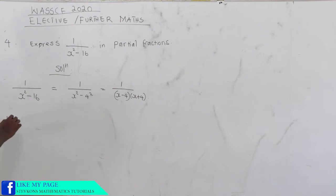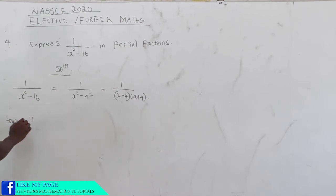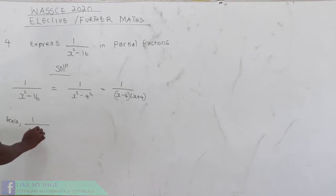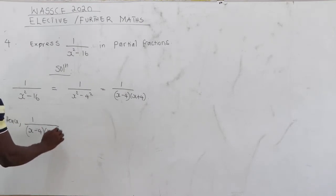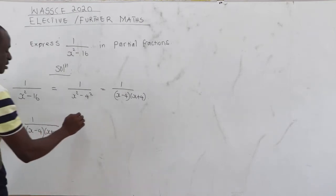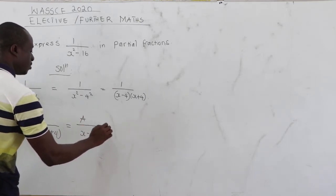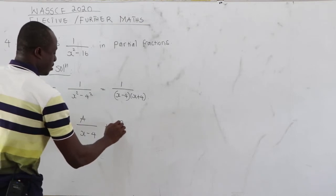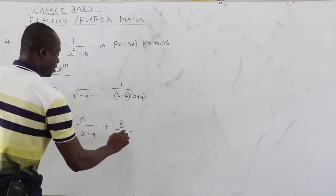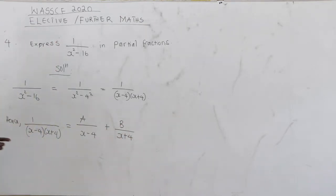Hence, we have 1 over x minus 4, x plus 4. This can be put as A all over x minus 4 plus B all over x plus 4. Now multiplying through the LCD, which is x minus 4, x plus 4,